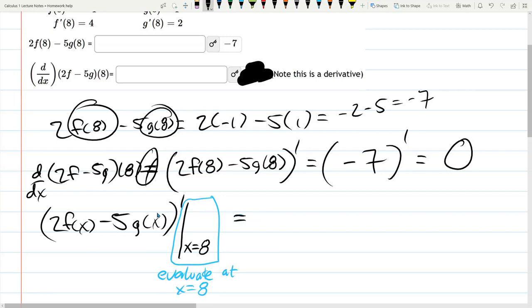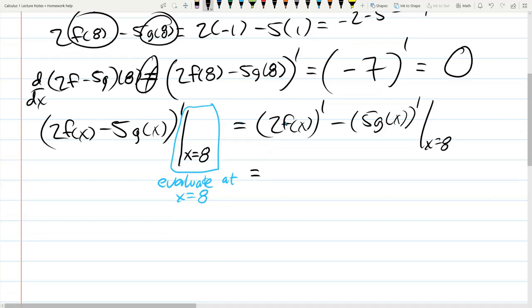So derivative. First up, we're going to apply it to subtraction. So I'm splitting the derivative over subtraction. Still evaluating x equals 8, we'll do that at the very end. That's the last step. And now, the constant multiple rule. These two constant multiples can be brought out front. So we have 2 f'(x) minus 5 g'(x) evaluated at x equals 8.